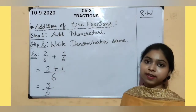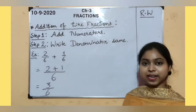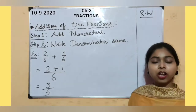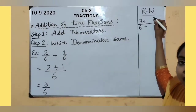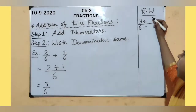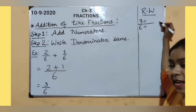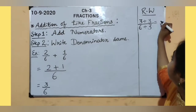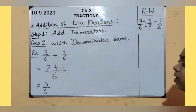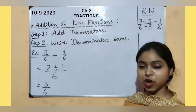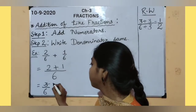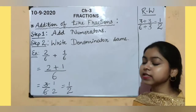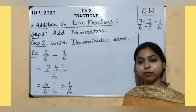Our answer is 3 upon 6. We need to reduce our answer to its lowest term in the rough work column on the right side of your notebook. We will divide numerator and denominator by their common factor. We will not divide by 1, as we get the same answer. 3 divided by 2 is not divisible, so we divide by 3. 3 divided by 3 is 1, and 6 divided by 3 is 2. So 3 divided by 3 is 1 and 6 divided by 3 is 2. So 1 upon 2 is the lowest term and the final answer after addition.